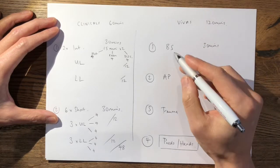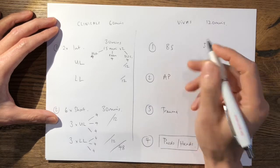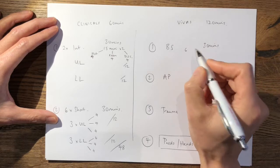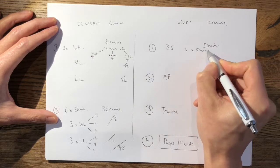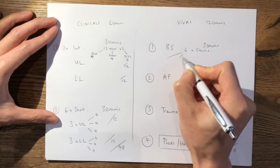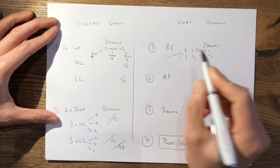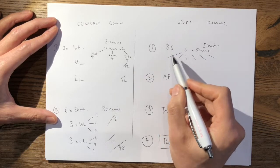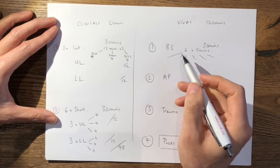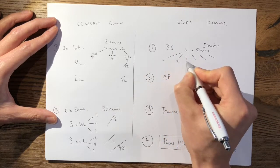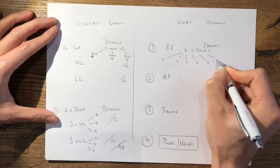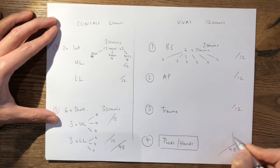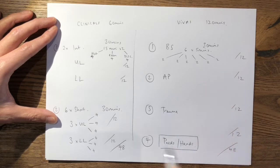In your viva station, your 30 minutes are divided up into six segments of five minutes each, so you have six question stems of five minutes. In each of those questions, every examiner, so you have two examiners, each examiner will give you a mark out of eight. So you'll have two scoring opportunities in each of those questions. So each viva table you will have 12 scoring opportunities to total 48.